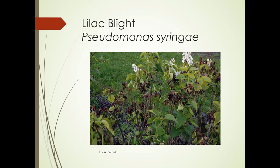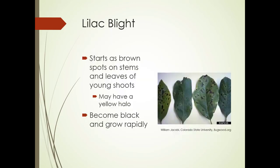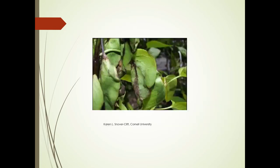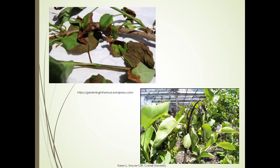Lilac blight — you may start to see this out there. It's caused by Pseudomonas syringae, and don't let it fool you — this disease affects more than lilacs. You can see the tips are all black. It starts as brown spots on stems and leaves of young shoots, which may have a yellow halo, then they become black and grow rapidly. One indicator of Pseudomonas is a shepherd's crook appearance on the lower affected shoots.